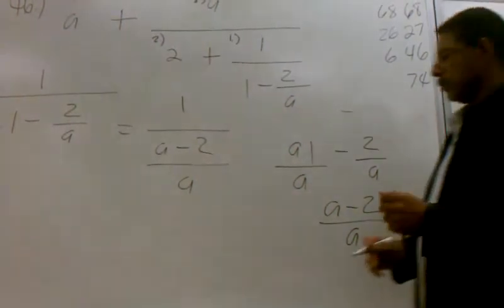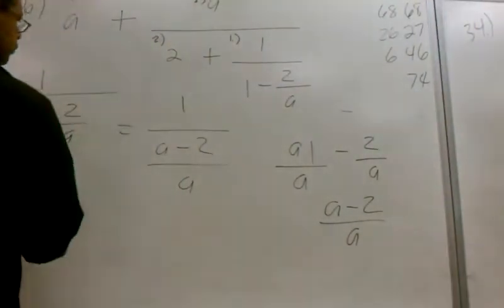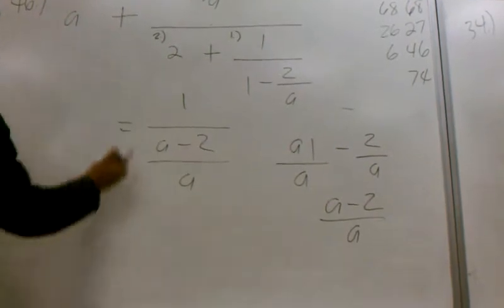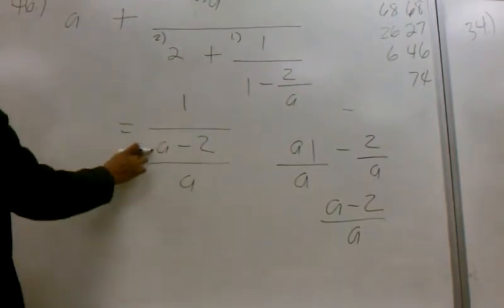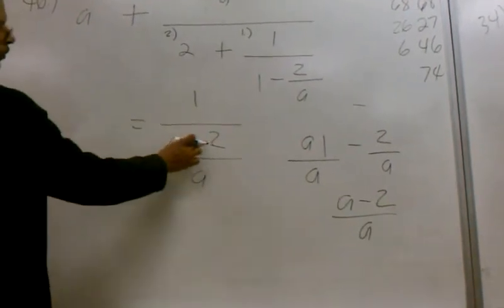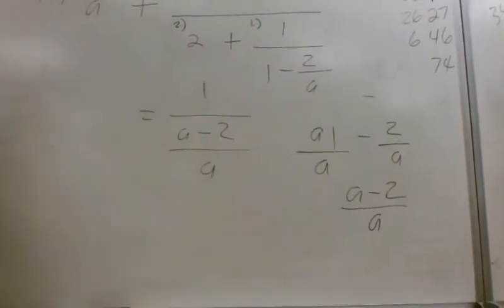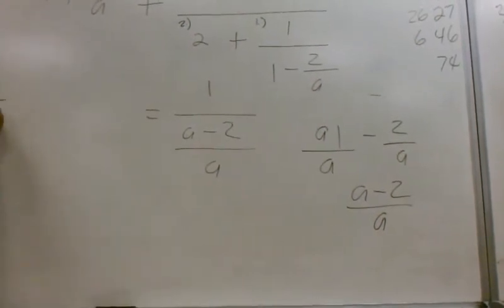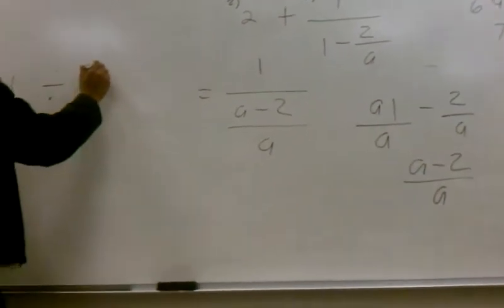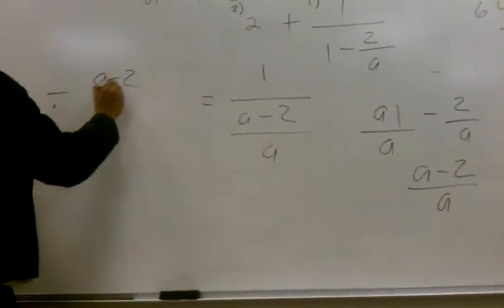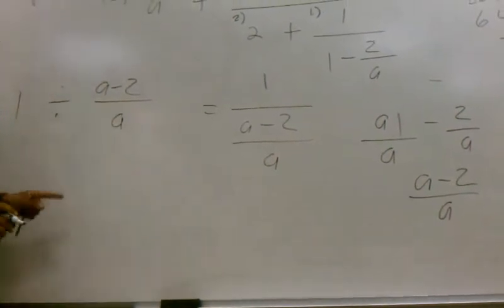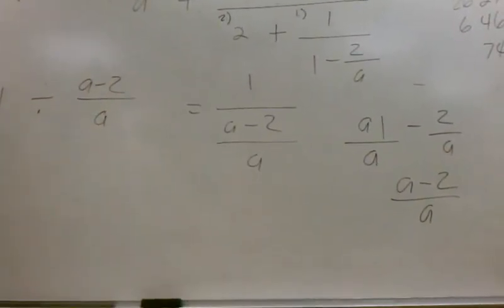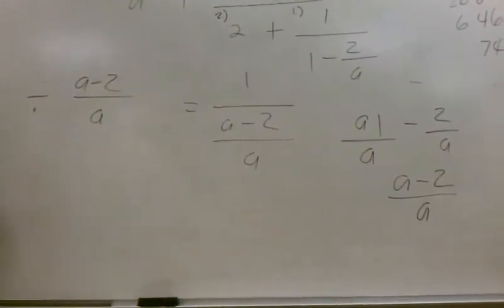Let's move on. So now we're going to take the 1 and divide it by a minus 2 over a. So what happens when I take something and divide it by something else? You flip it — you do the reciprocal. So what's the reciprocal of a minus 2 over a? A over a minus 2.